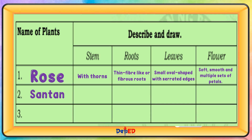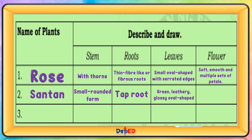Santan: small, rounded form. Roots: taproot. Leaves: green, leathery, glossy, oval-shaped. Flower: tubular and bloom in dense rounded clusters.